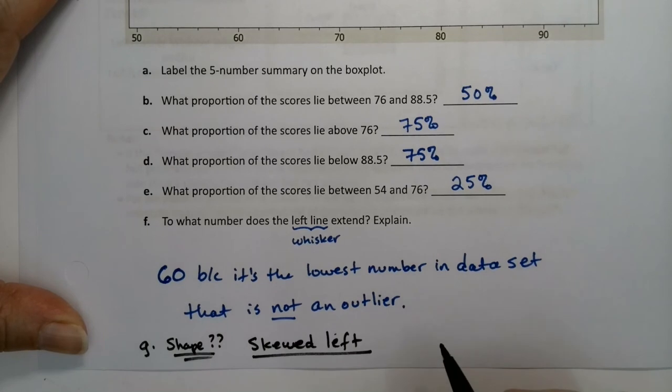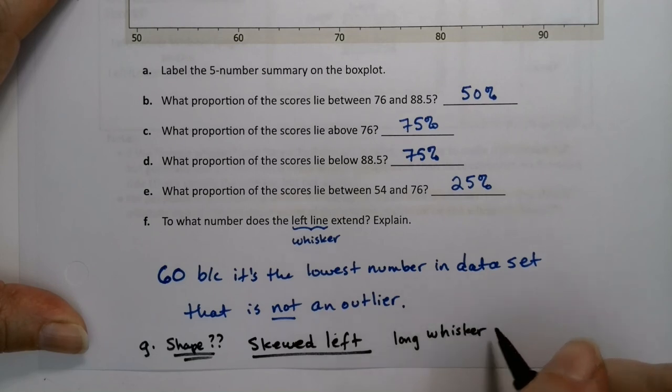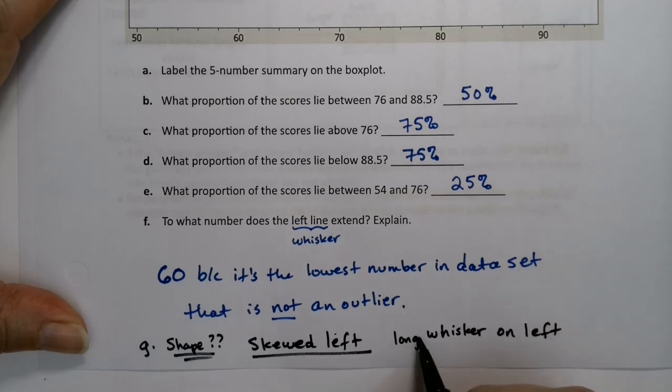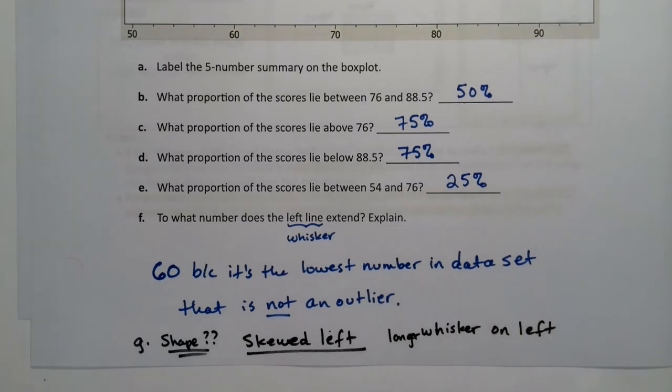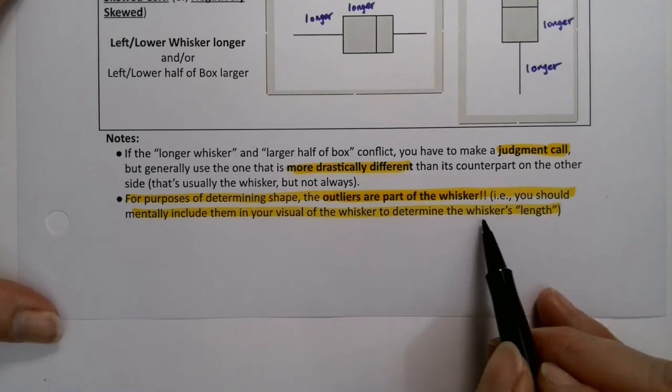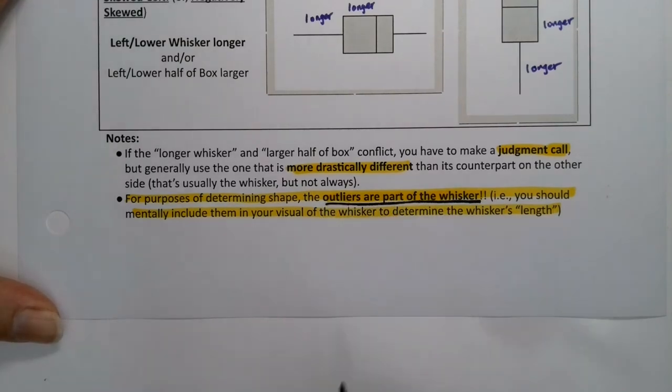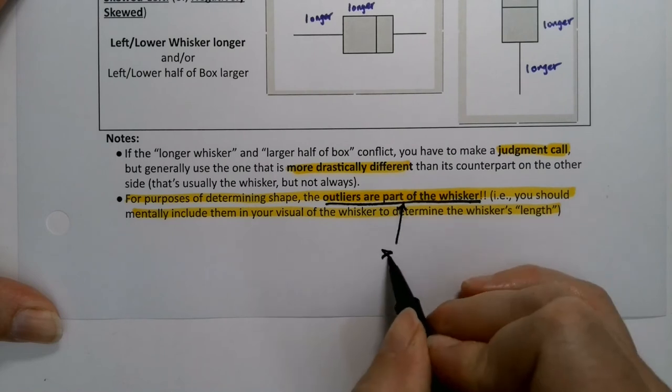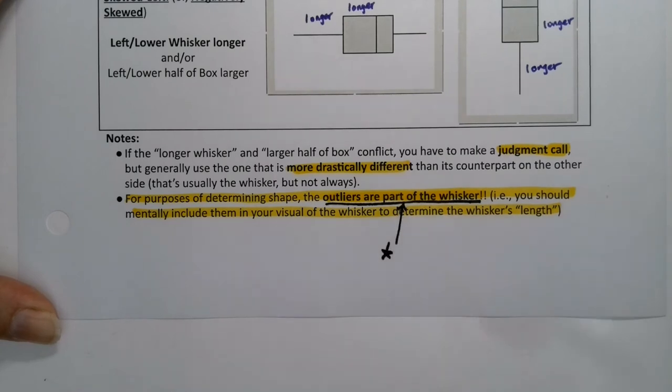So that's why this data set is skewed left. As a matter of fact, I didn't ask it, but I could right here, right now. If I want the shape, we would say skewed left for sure. It has outliers on the left side and has a long whisker on the left. Long whisker on the left and a larger box on the left, but the long whisker is enough. It's longer than it is on the right. So never forget those dots count as part of that whisker. Very important.